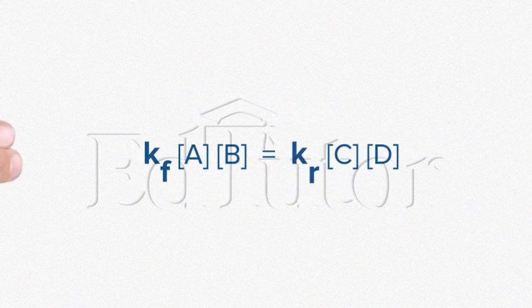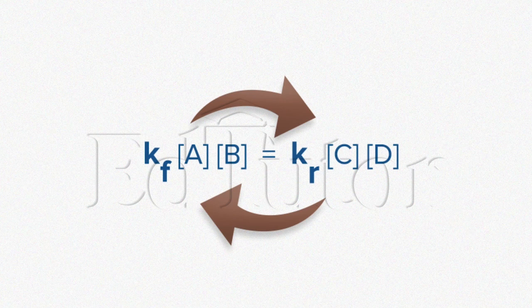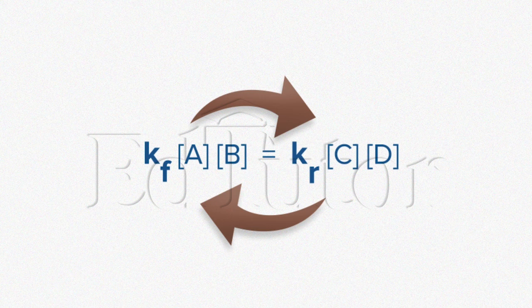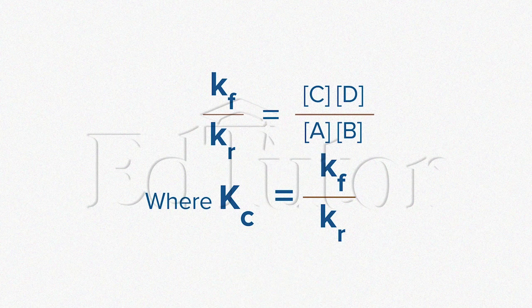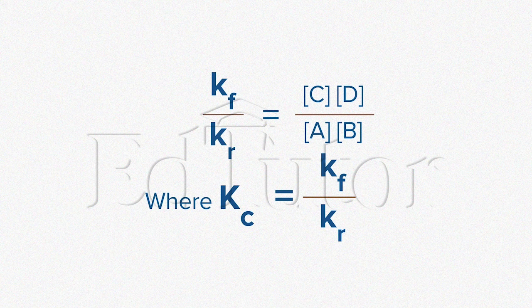If we were to rearrange the constants, KF and Kr to the left side and the active masses to the right side, we would get the following equation as you can see. So, KF over Kr equals concentration of C and D divided by the concentrations of A and B.